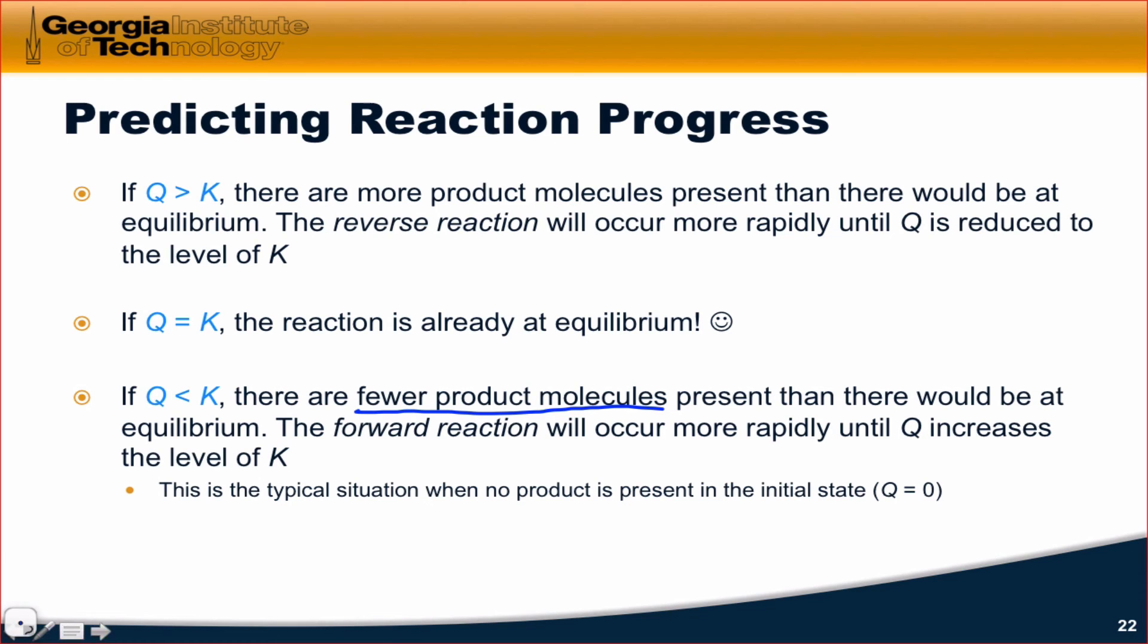And if you think about the way we typically run chemical reactions, this is the typical situation at the start of a chemical reaction. Q is zero because we don't have any products present. Our goal is to create products, and we mix pure reactants to do that.